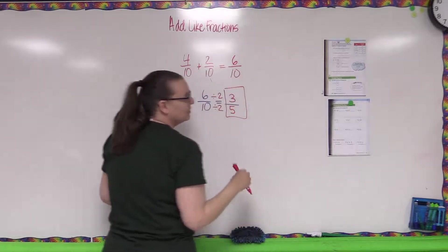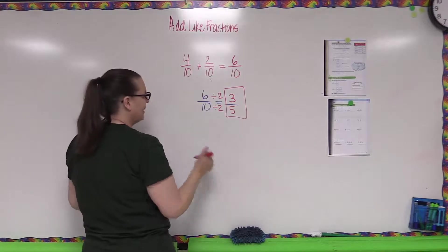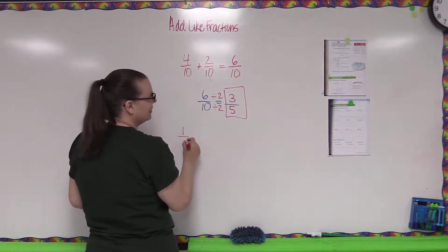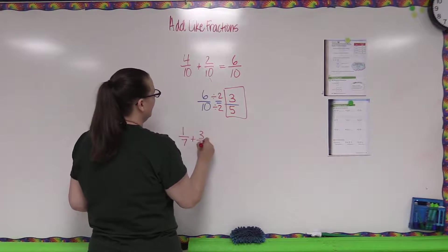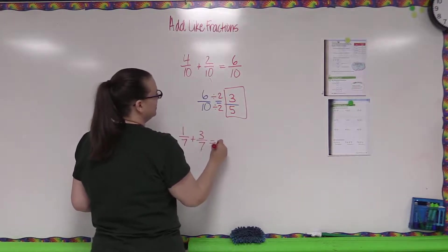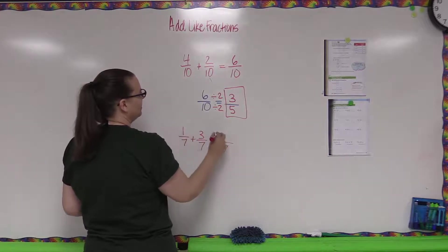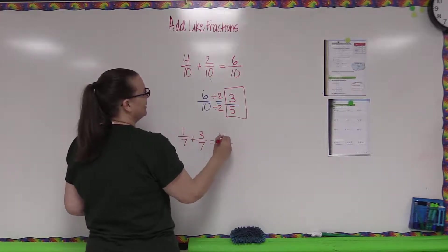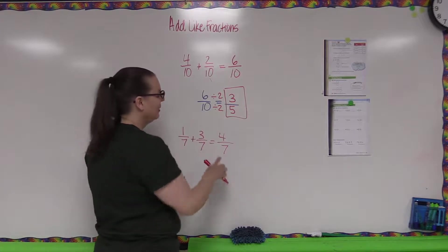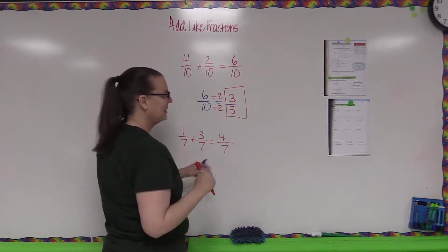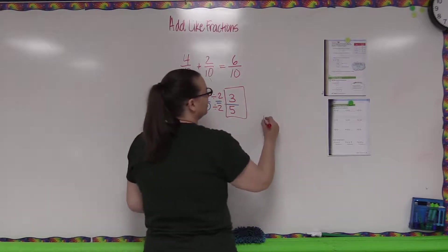Down at the bottom we have more practice problems. For fractions with the same denominator, just add them. For one-seventh plus three-sevenths: keep the denominator, one plus three is four — so four-sevenths. We can't simplify further because seven is already a prime number, so that one's done.